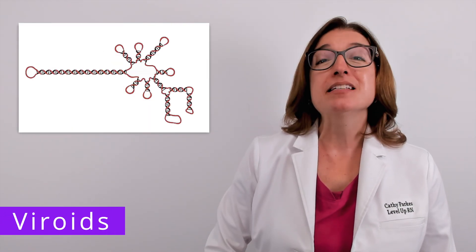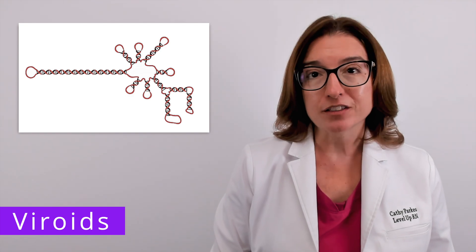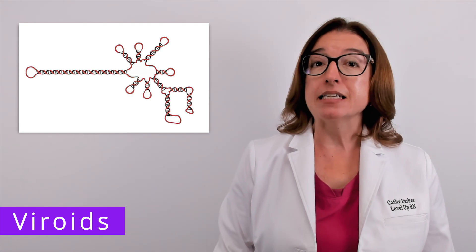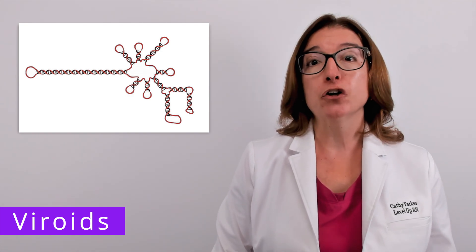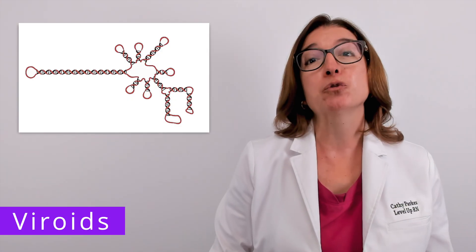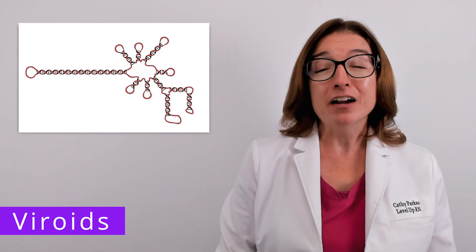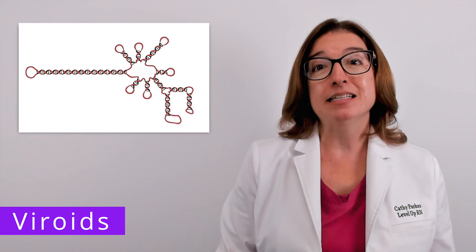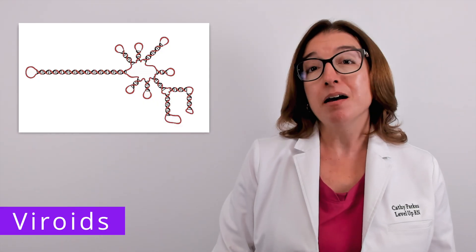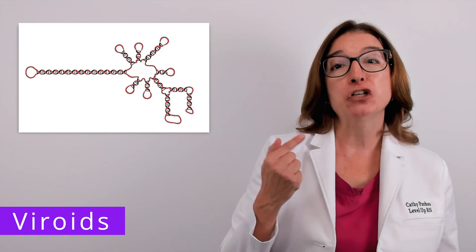A viroid is another type of acellular infectious agent. A viroid consists of a short strand of circular RNA without a protein coat surrounding the RNA. Viroids only cause diseases in plants, so they are not pathogenic towards animals, which includes humans.